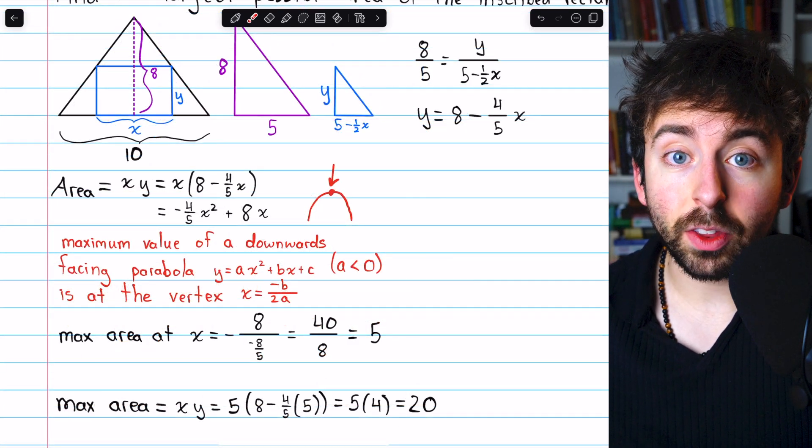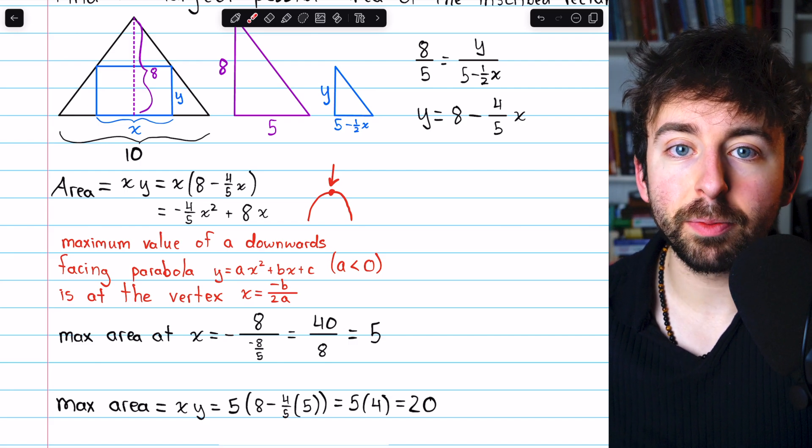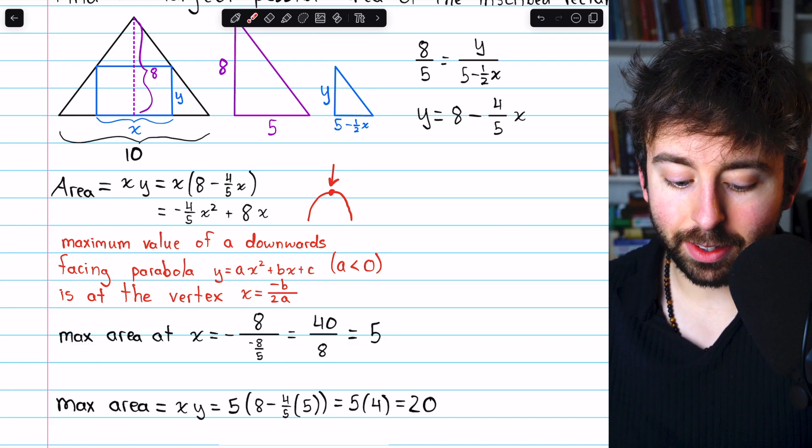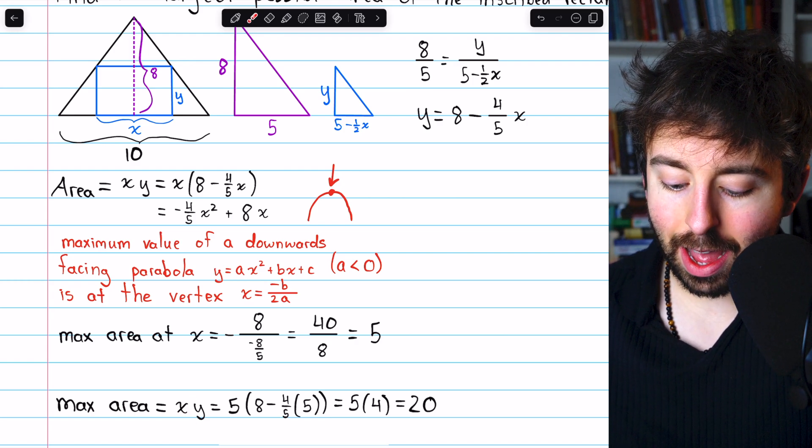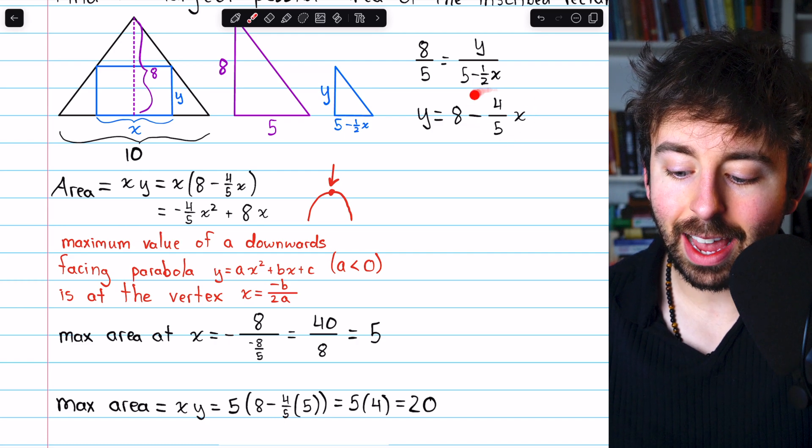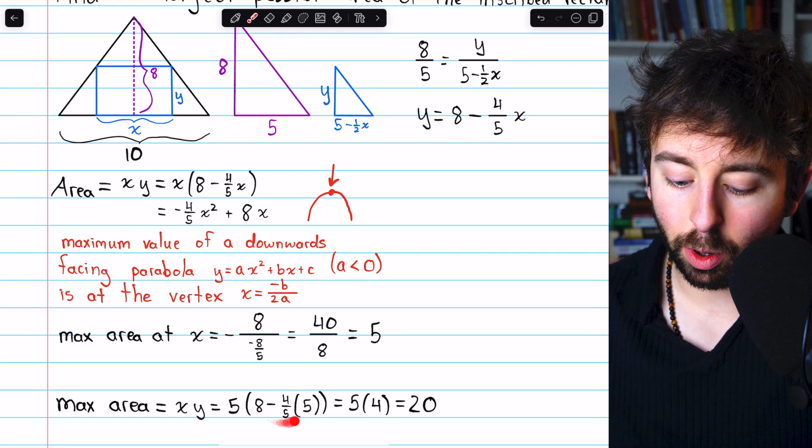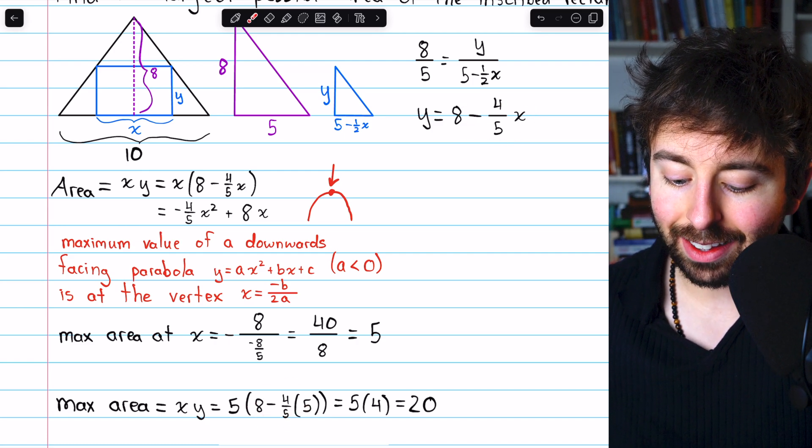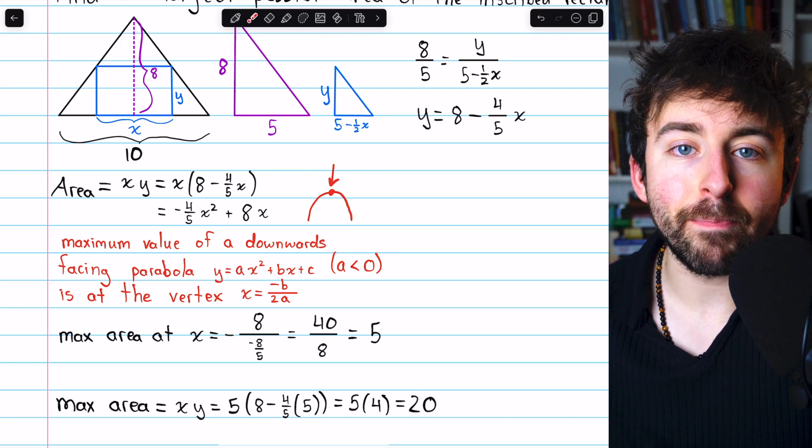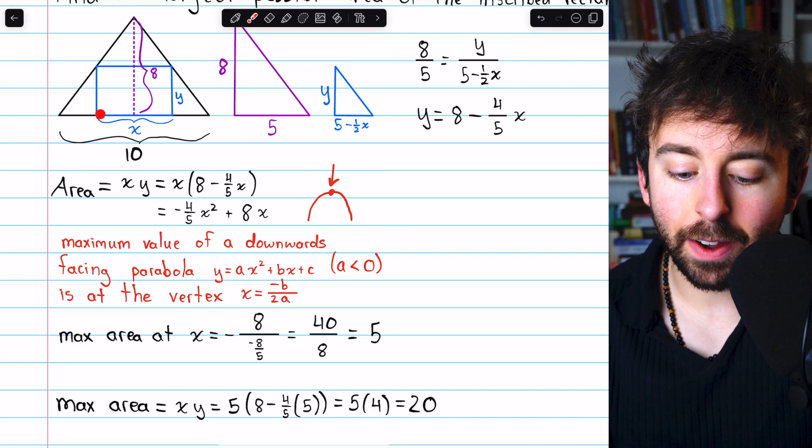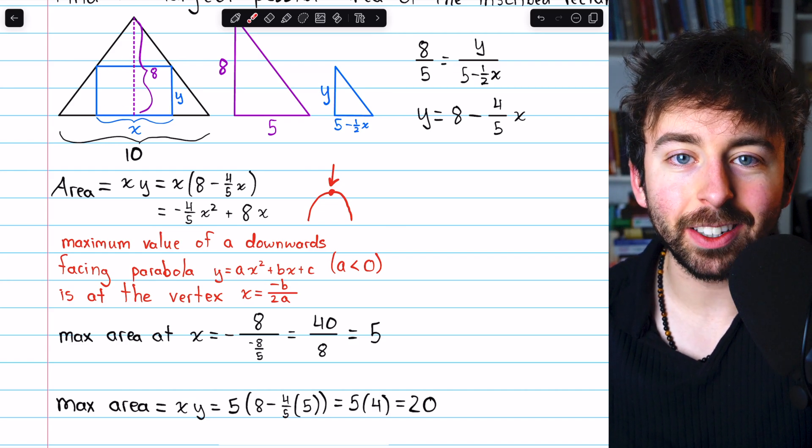Finally, don't forget the question is about the maximum area. We just found the base. So the maximum area, x times y, is 5 times 8 minus 4 fifths x, which is 8 minus 4 fifths of 5, and that's just 5 times 4, or 20. That's the maximum possible area of this inscribed rectangle.